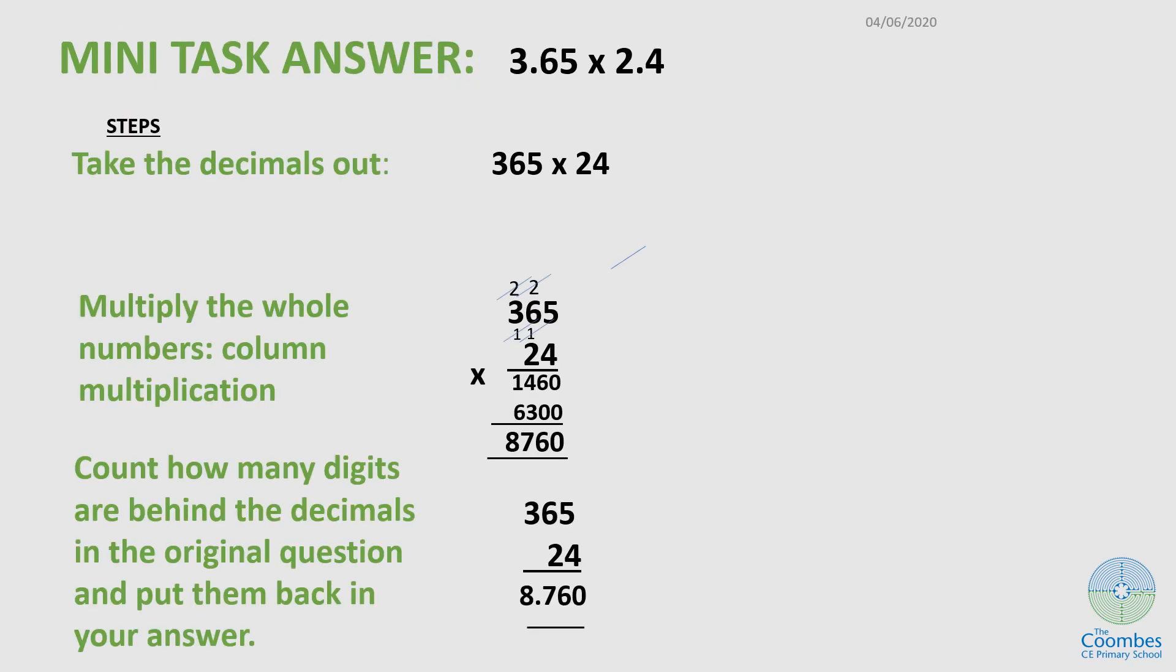How did you do? Given 3.65 times 2.4, the first step I will do is take out the decimal point. Now I will have 365 times 24. If I use previous knowledge to multiply 3 digit by 2 digit, I should have 8,760.